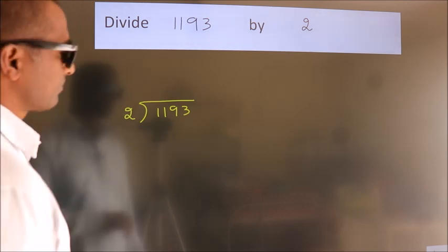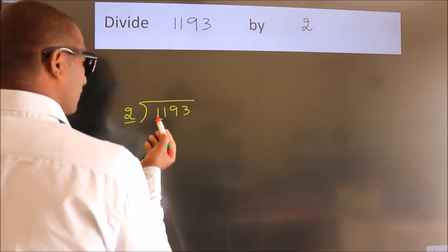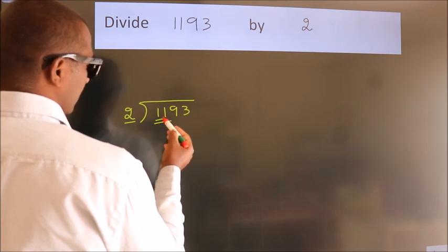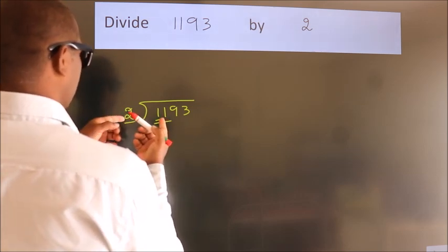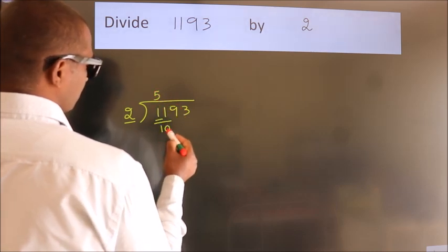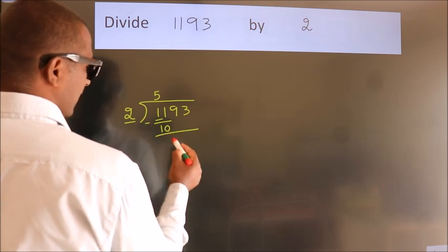Next, here we have 1, here 2. 1 is smaller than 2, so we should take 2 numbers: 11. A number close to 11 in the 2 table is 2 times 5 is 10. Now we should subtract. We get 1.